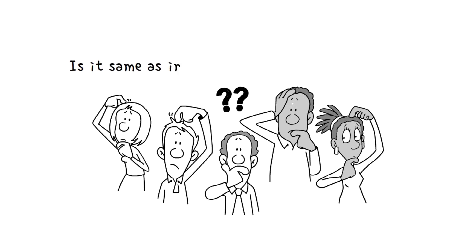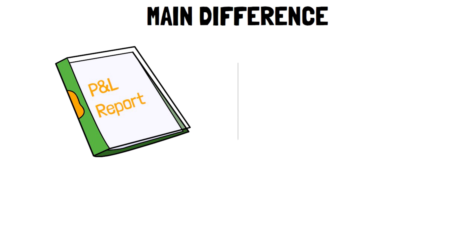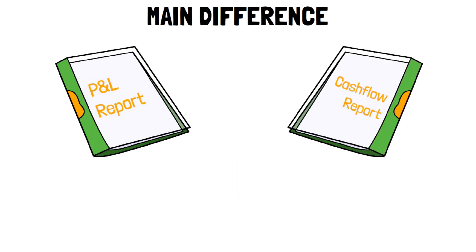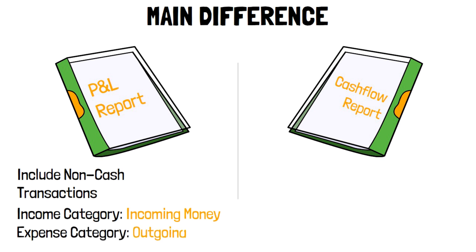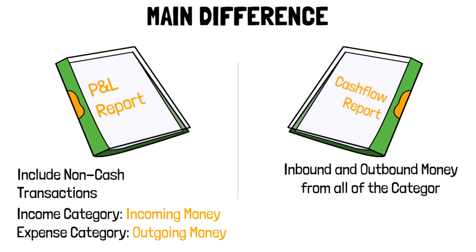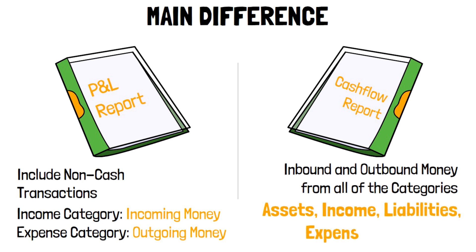You might ask if this is not the same as the income or profit and loss report, and you would be right in some instances. The main difference is twofold. Firstly, the profit and loss or P&L report can sometimes include non-cash transactions. And secondly, the P&L report only focuses on the income category as the source of incoming money and the expense category as the source of outgoing money. Meanwhile, the cash flow report includes inbound and outbound money from all of the categories of the business, including assets, income, liabilities, expenses, and equity.